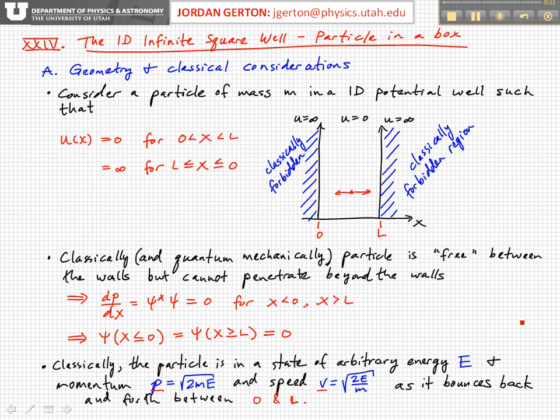So we now imagine the particle not as this. We know that quantum mechanically if we have a very small particle, a quantum particle, we can't think of it as a well-defined particle anymore whose position and momentum we know with arbitrary precision. We know that the particle has wave-like characteristics.